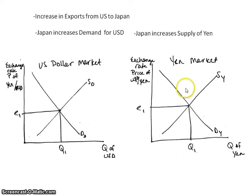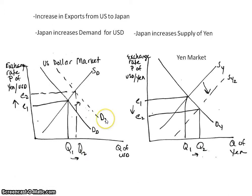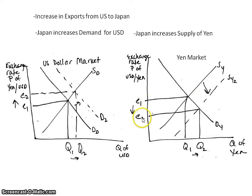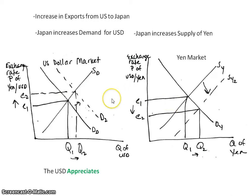Japan will then need to supply their yen in order to demand the dollar. When we look at what this looks like on a graph, you can see an increase in the demand, which is increasing the exchange rate. And over here, you have an increase in the supply of yen, which is decreasing the exchange rate. This means the U.S. has an increase in the exchange rate, so they have a stronger dollar — or you could say the U.S. dollar appreciates. That means it takes less U.S. dollars to buy the yen, or it takes more yen to buy a U.S. dollar. Because the exchange rate has gone down in the yen market, we see that the yen depreciates.